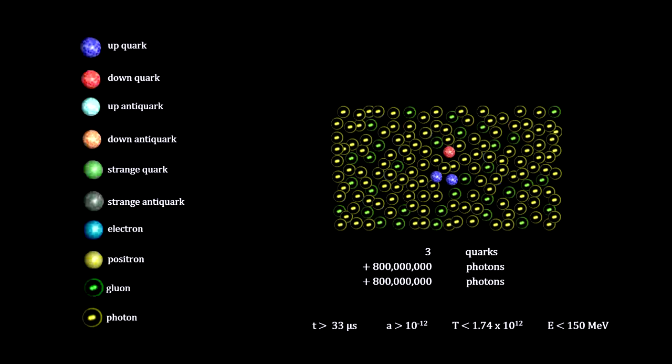In our example, only three quarks would remain, and these three quarks would be surrounded by 1.6 billion photons, the product of the annihilations.